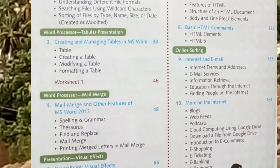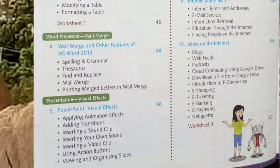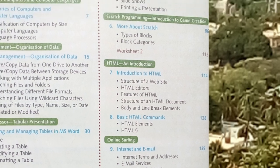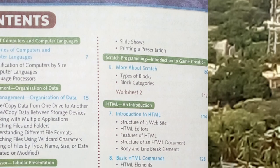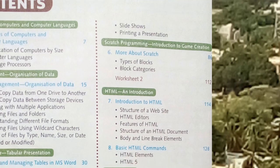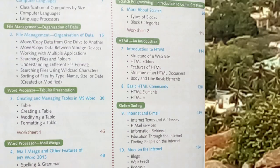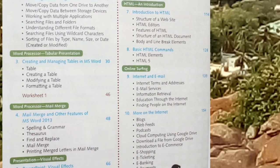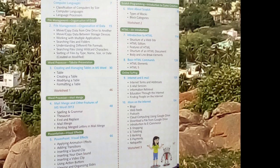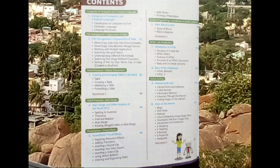Word processor mail merge is not there — it has already been cut from the reduced syllabus. About Scratch, it is there but chapters seven and eight on HTML — the HTML concept itself has been cut from the syllabus. Remaining online surfing is there, but the tenth chapter on more about it is not there.